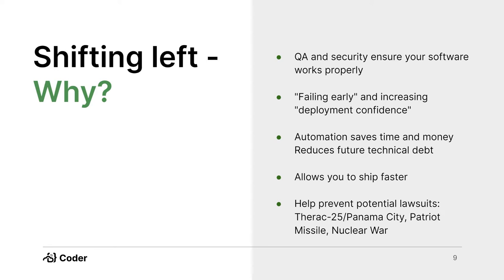Because we have this 'failing early' concept — in the development process, having QA automations run, having security automations run — we're able to detect issues early. If we're no longer failing at this early stage, we have a lot more confidence in our deployment to promote it into staging or pre-prod, or possibly even going out to production. Basically all these automations save a lot of time, save a lot of money, and most importantly for the developer, it's going to save you on future technical debt.